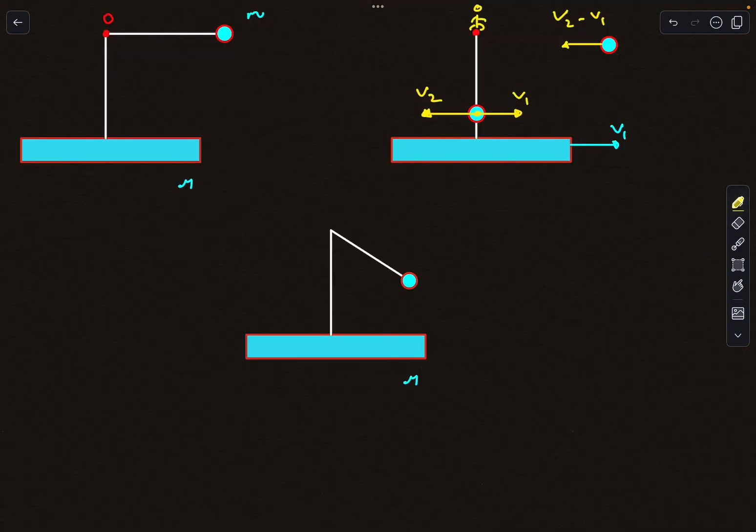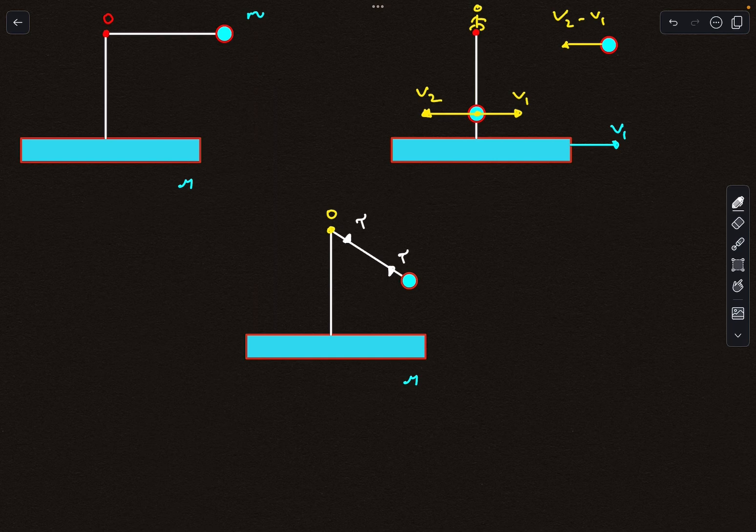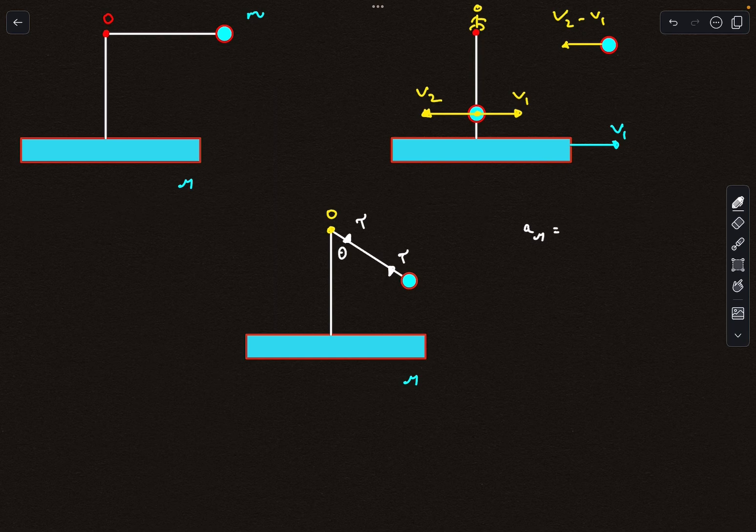Now let's talk about what's happening at some intermediate time. Clearly the string is pulling on this rod with some tension force T, and the angle it makes with the vertical is theta. The acceleration of the capital M mass or this block we can easily write as T sin theta divided by capital M.